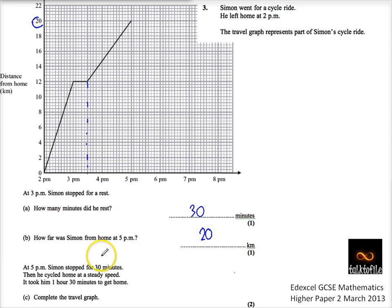It says, at 5pm he stopped for 30 minutes, then he cycled home at a steady pace, and it took him an hour and 30 minutes to get home. So complete the travel graph. I'm just going to draw some little lines here to help us, and we'll do it in blue.